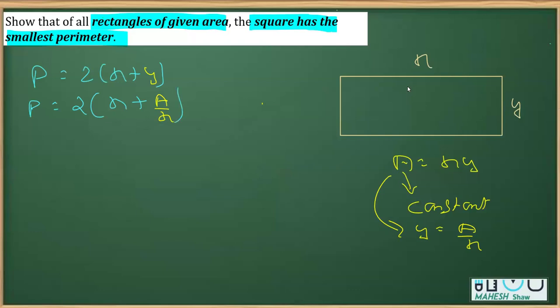Now, first thing that we do is to differentiate it with respect to x. So dP by dx, 2 is as it is, differentiation of x is 1, a being a constant, and differentiation of 1 by x is minus 1 by x square, so this will become minus 1 over x square.